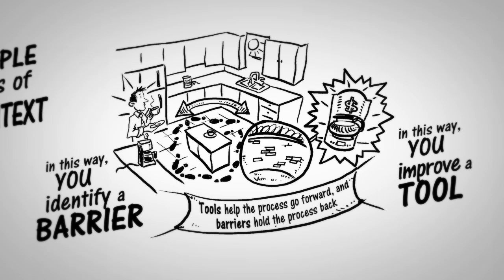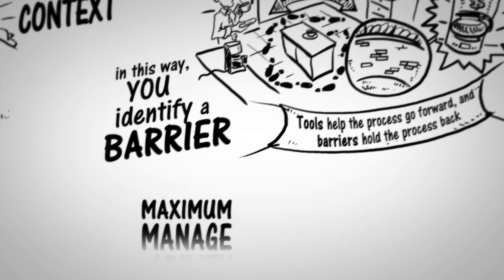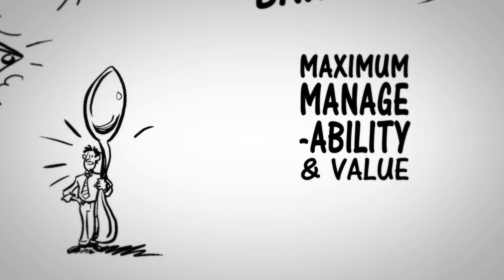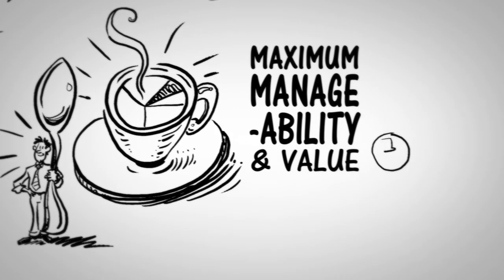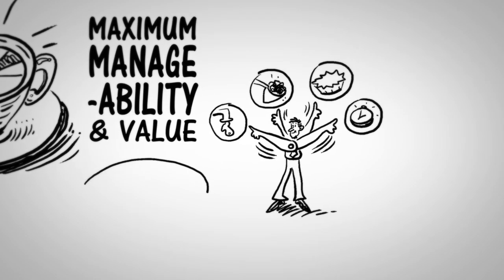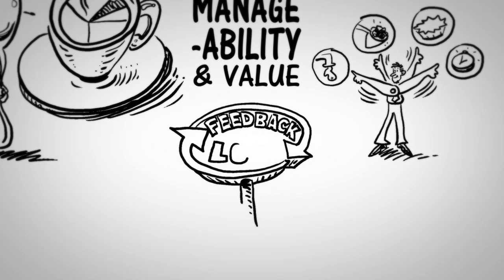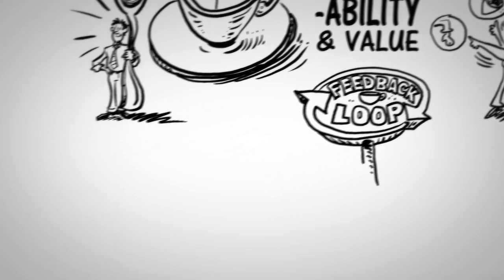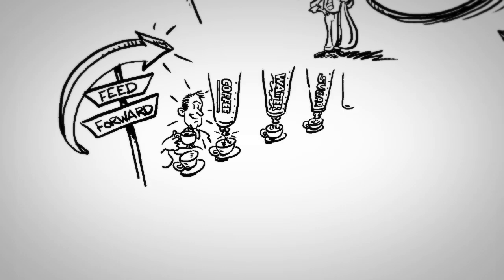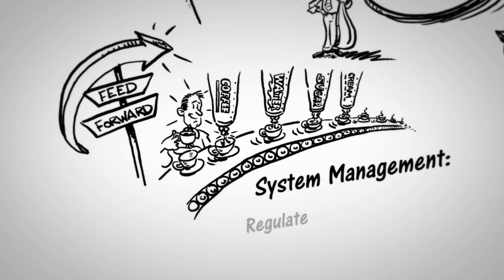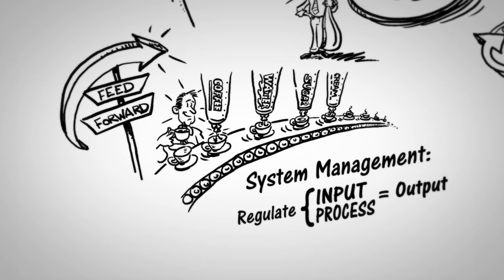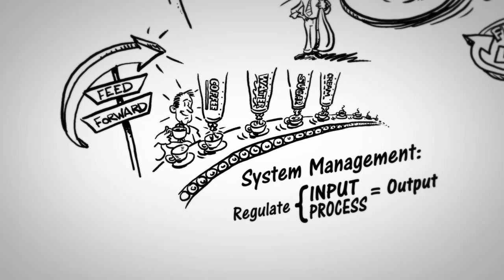You design the system for maximum manageability and value. A more manageable system is one that requires less intervention to achieve the desired benefits. You also regulate the system by controlling every step. At each step, you observe the output and then adjust the process as required. This is called a feedback loop. There is another kind of control loop called feedforward, in which you monitor input variations and then adjust the process to compensate. System management involves regulating the input and process for the desired output. If the process changes, then tools, barriers, and regulating may also need to be changed depending upon the desired benefit.